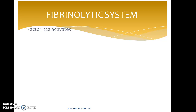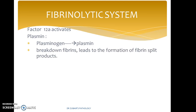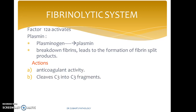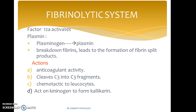In the fibrinolytic system, Factor 12a activates plasmin — plasminogen gets converted to plasmin. It causes breakdown of fibrin, leading to formation of fibrin split products. Its actions include anticoagulant activity, cleavage of C3 to C3 fragments, chemotaxis of leukocytes, and it acts on kininogen to form callicrein.